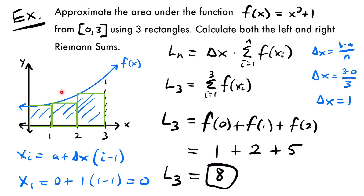To conclude this problem: since R sub 3 equals 17 (an overestimate) and L sub 3 equals 8 (an underestimate), we can say the actual area is less than 17 but greater than 8. So the actual area will be somewhere between 8 and 17. That's a nice result that comes from doing both Riemann sums.